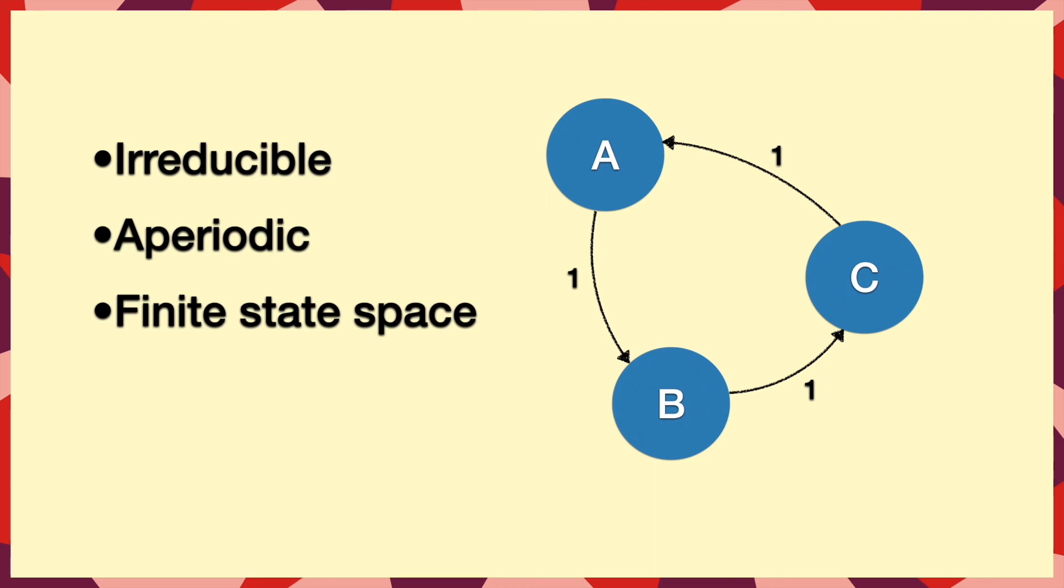So to come back to monopoly, clearly it is irreducible, as we can always get from any square to any other, not necessarily in one step, but in a few steps we can. It's obviously aperiodic, and it has a finite system space, even if it sometimes doesn't feel that way when you're playing.